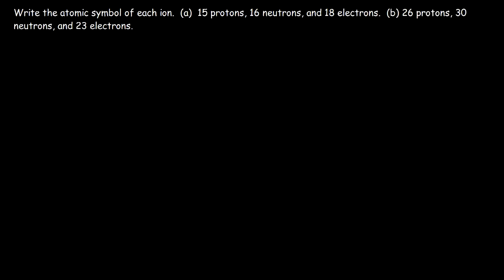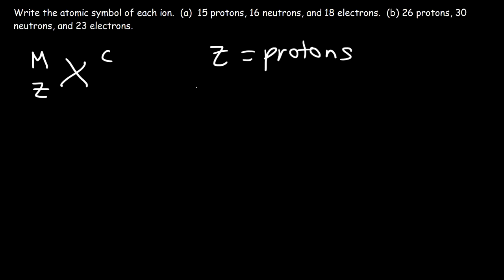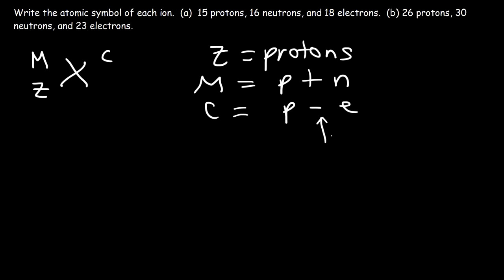Feel free to pause the video and try these problems. For some element X, the atomic number Z equals the number of protons, the mass number M equals the sum of protons and neutrons, and the charge equals protons minus electrons. The negative sign accounts for the fact that electrons are negatively charged, so you don't need to add another negative sign in this equation.